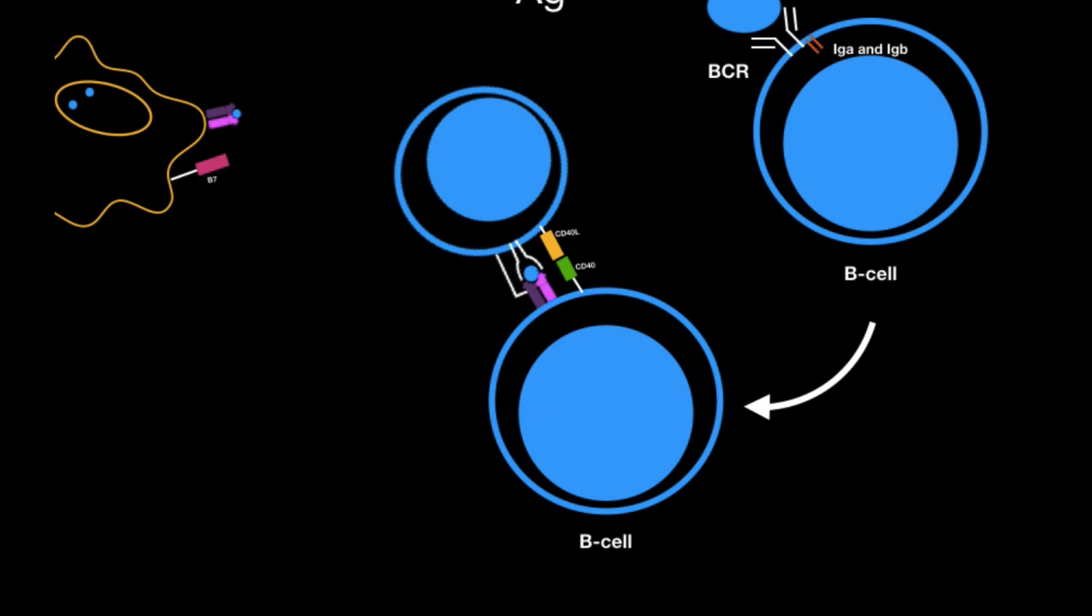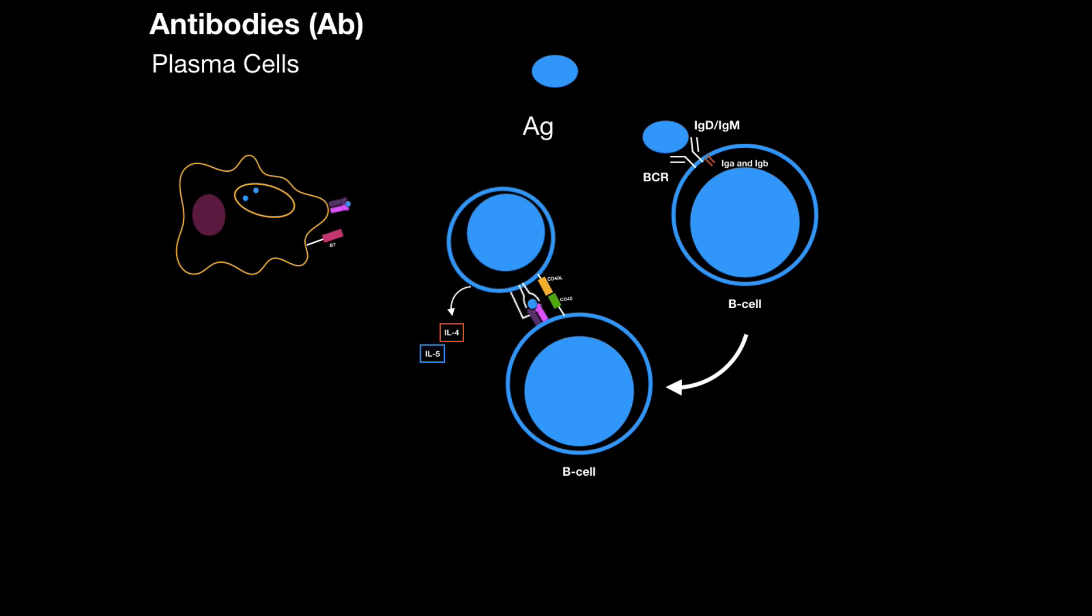Now what happens? T helper cell 2 is going to secrete interleukin 4, 5, 6 and interleukin 10. And T helper cell 1 can secrete out interleukin 2 or interferon gamma. Each one of these are responsible for what kind of antibody this B cell is going to start to release. Now, if we need more immunoglobulins type A, for example, in the mucous membranes, T helper cell 2 will release more interleukin 5.